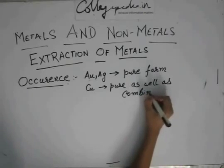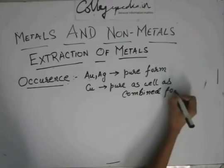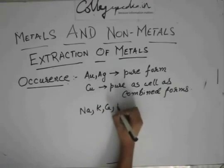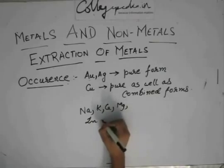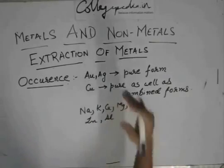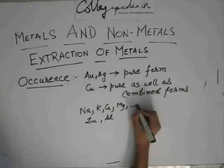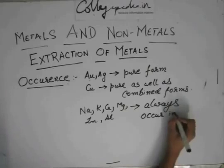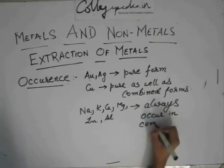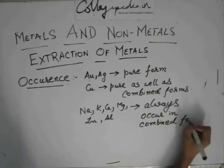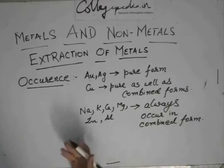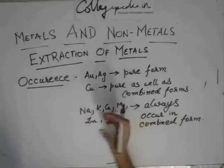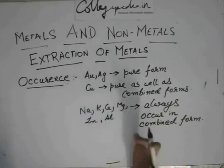Sometimes even copper occurs in pure form, but copper generally occurs in pure as well as combined form. If you're lucky, you'll get the pure form; otherwise you'll get the combined form. But metals such as sodium, potassium, calcium, magnesium, zinc, aluminium — all these very reactive metals which are towards the top of the reactivity series — they will always occur in combined form. Because they are very reactive, sodium will not want to stay as sodium; it will want to react with something in the atmosphere like chlorine or oxygen, and then it will form a compound.